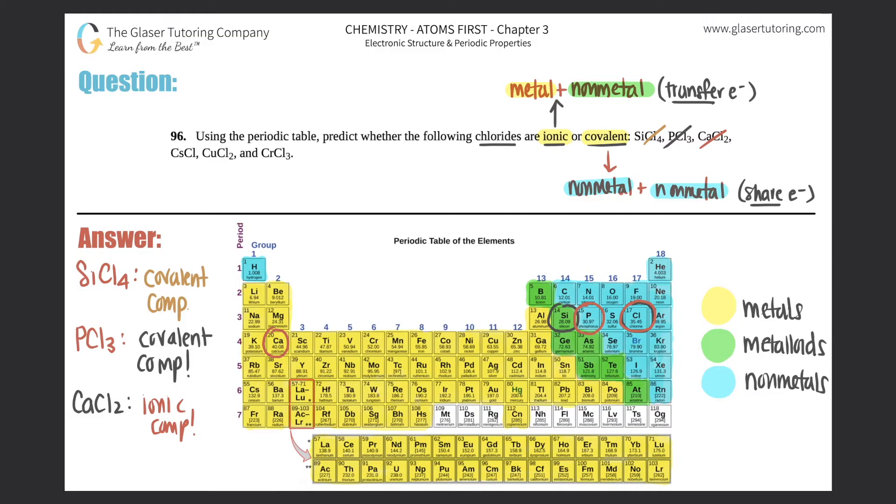Next, CsCl. Alright, well, where is Cs? Cs is cesium, and Cs is down here. Number 55. Oh, it's a metal. I don't care what it's bound with. In this case, it's bound with chlorine. But I mean, who cares? As long as you see a metal, this is going to be an ionic compound. They will transfer electrons when they bind.